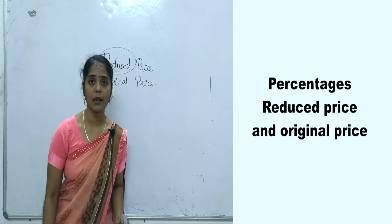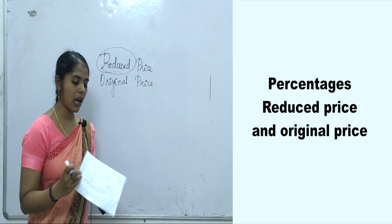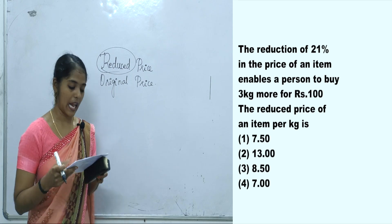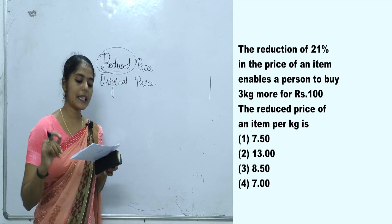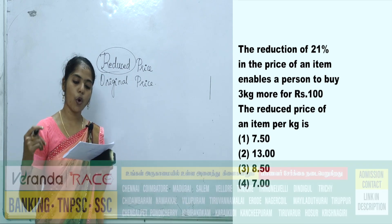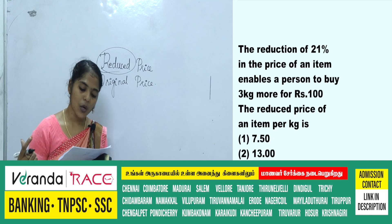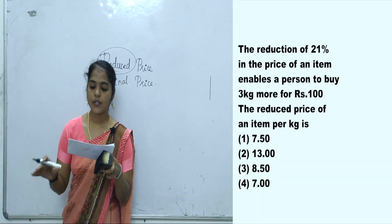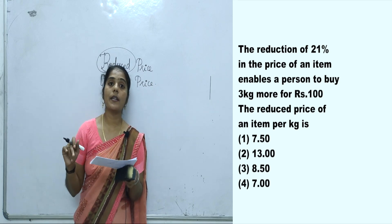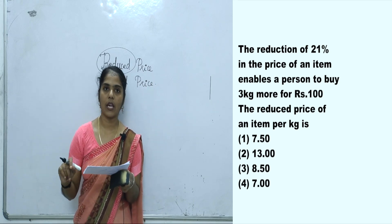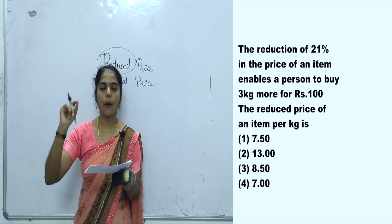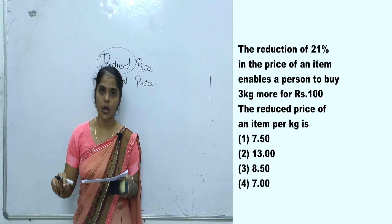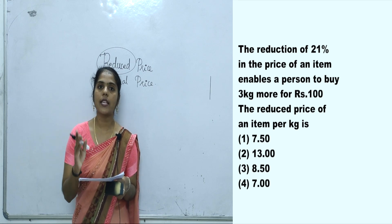Let's go directly to the question. The first question is: a reduction of 21% in the price of an item enables a person to buy 3 kg more for Rs. 100. The reduced price of the item per kg is — what is it? There is a 21% reduction in the price.